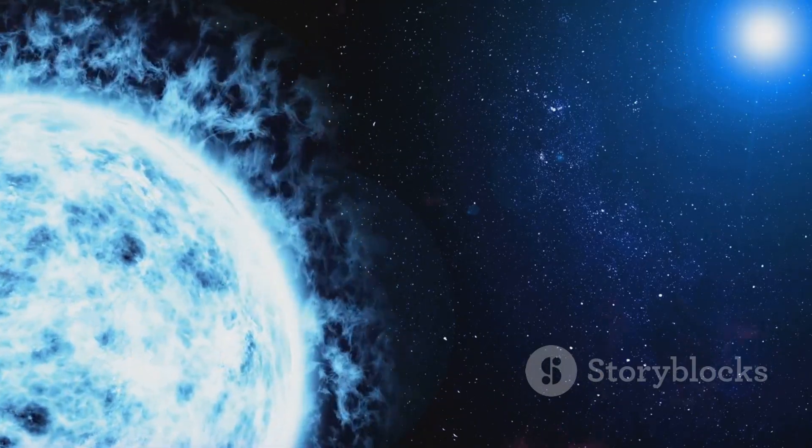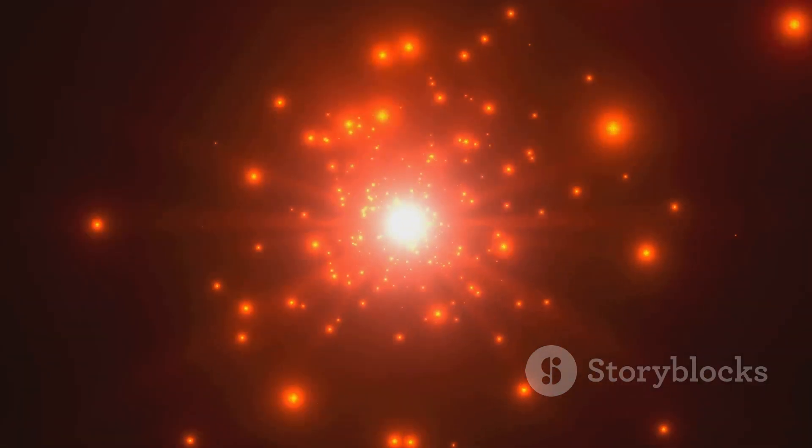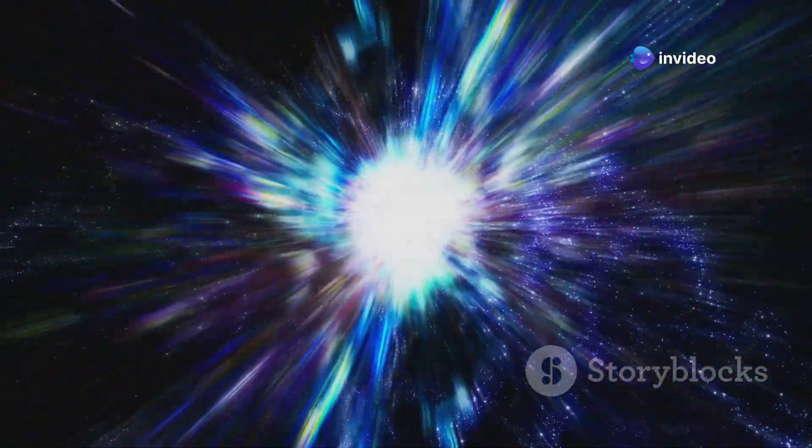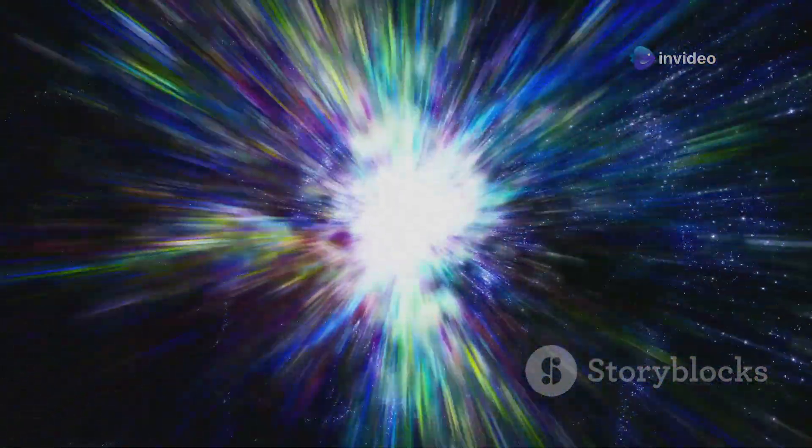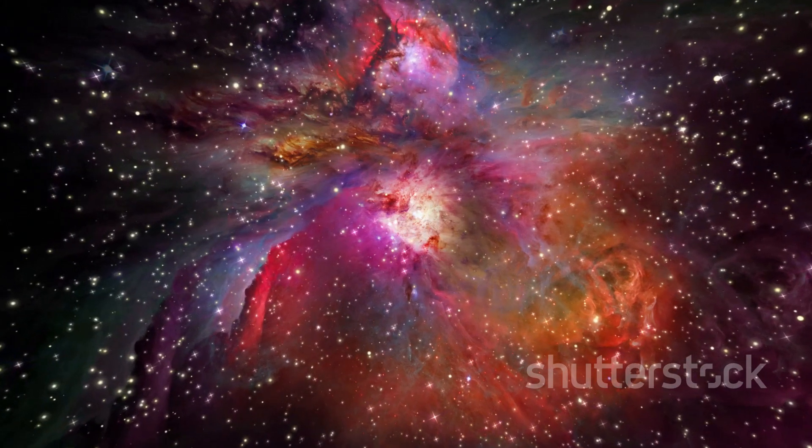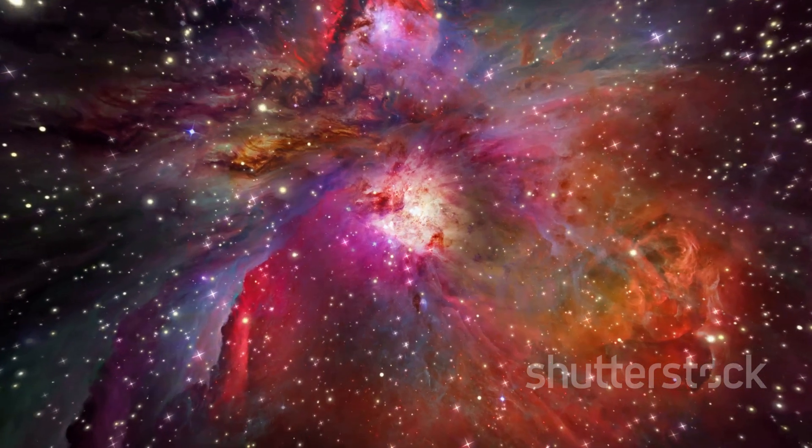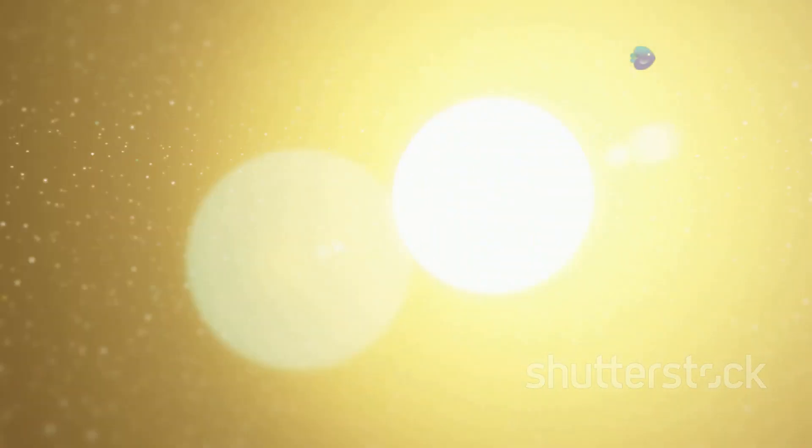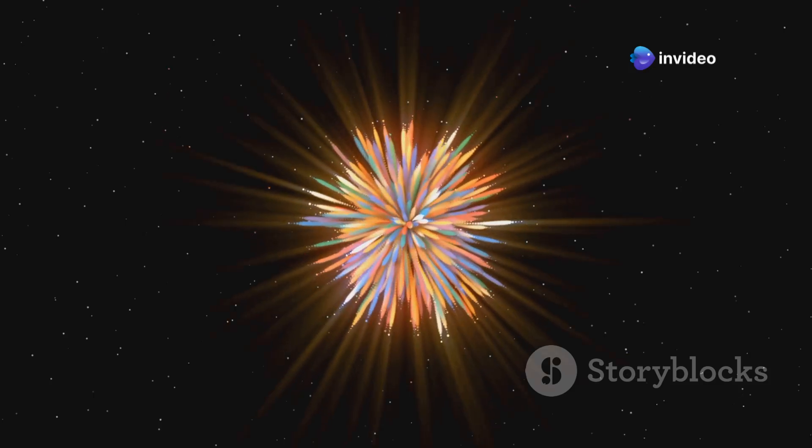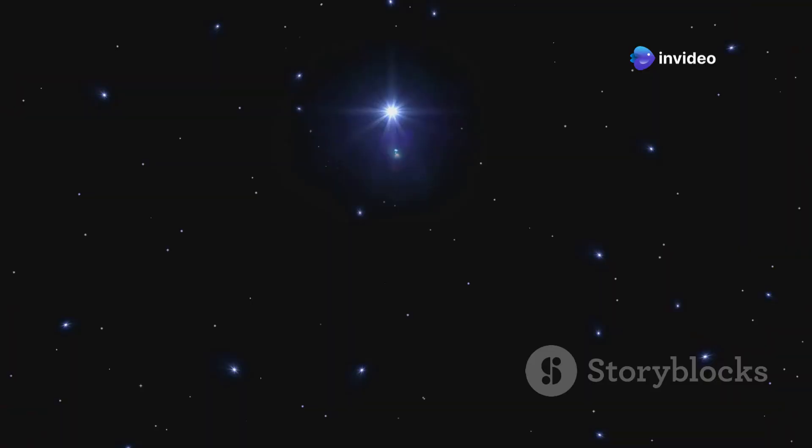Supergiants are even larger and more luminous than red giants. These stellar titans are relatively rare, but they burn bright and die young. They exhaust their fuel much faster than smaller stars. Rigel, a blue supergiant in the constellation Orion, is a prime example. It's about 80 times larger than the sun and over 100,000 times more luminous. Imagine the night sky illuminated by a star that bright.